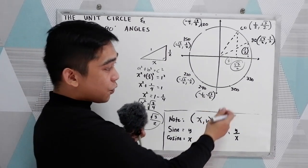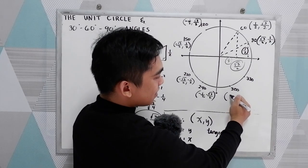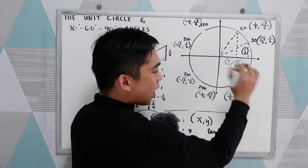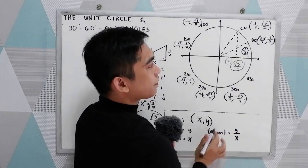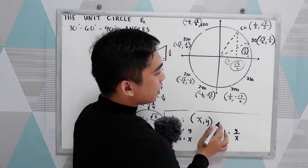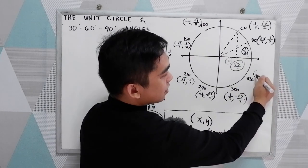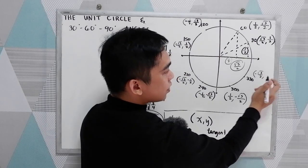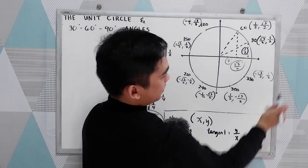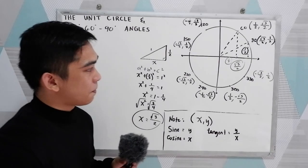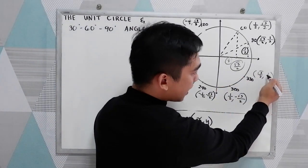And for 300 degrees, our x is one half and y is negative square root of three over two. And for 330 degrees, we have square root of three over two and one half. Quadrant four is positive x, negative y.